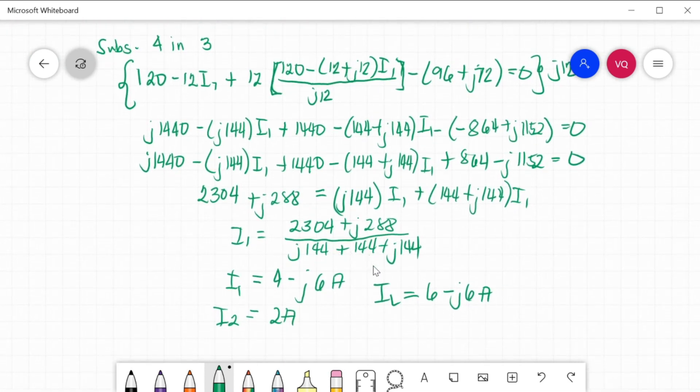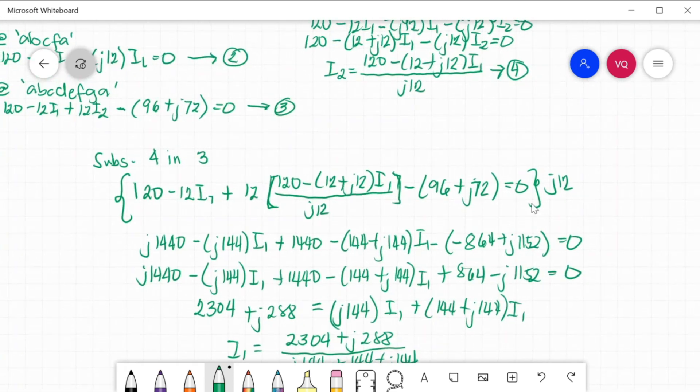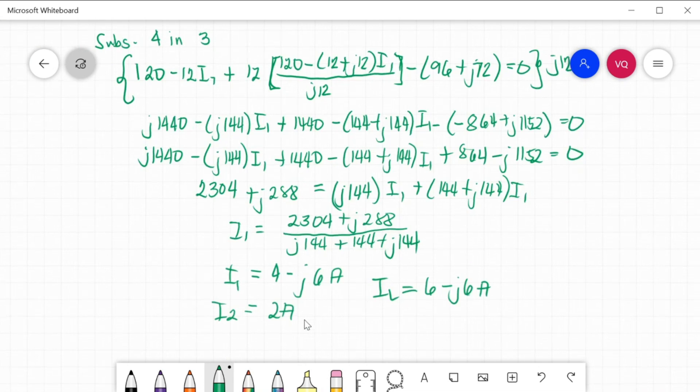Your I1 now will be 2304 plus J288 divided by 144 plus 288 J. You will get I1 equal to 4 minus J6 amperes. And then, for us to get I2, substitute this I1 to equation 4 para makuha mo yung I2. After substituting, you will get exactly 2 amperes. IL now from our KCL equation, I1 plus I2, you will get 6 minus J6 amperes.